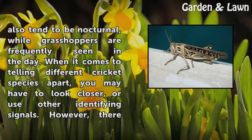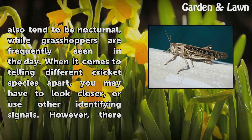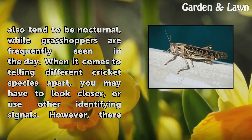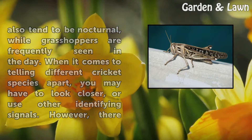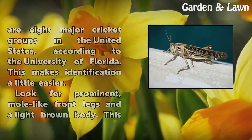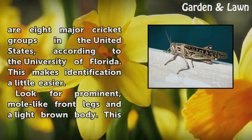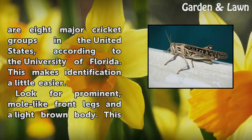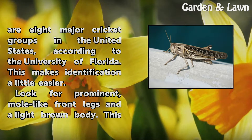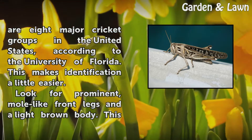When it comes to telling different cricket species apart, you may have to look closer or use other identifying signals. However, there are eight major cricket groups in the United States, according to the University of Florida. This makes identification a little easier.